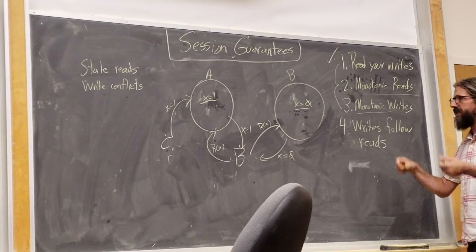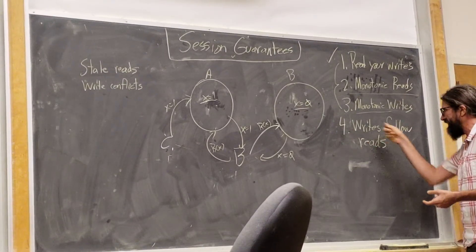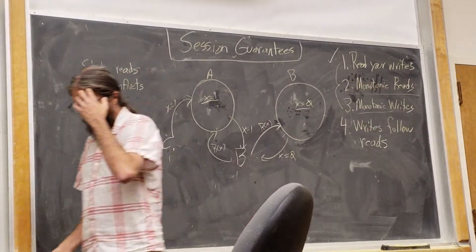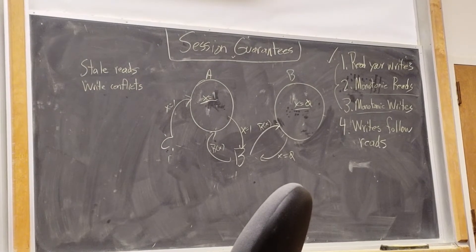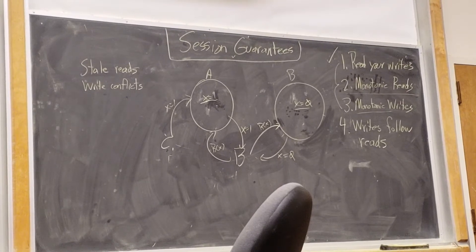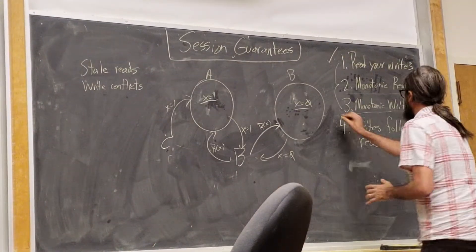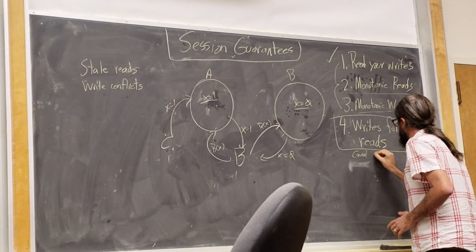But if you think about what that implies transitively, that if I'm going to establish an ordering in which whenever a process reads something, the writes that it does are considered strictly after, and you close that transitively, you get causality. Right? So it would appear to me, and maybe I'm being uncreative, that four is what we call causal consistency.